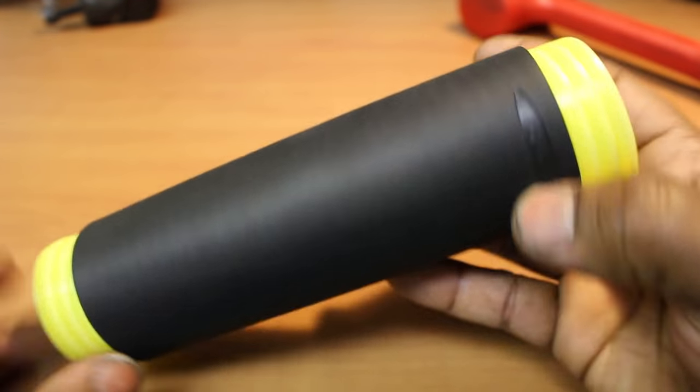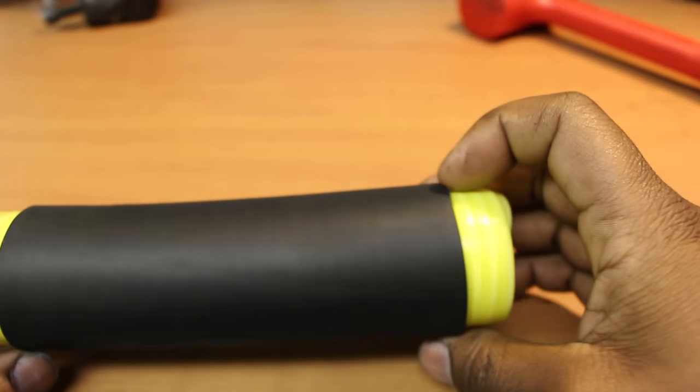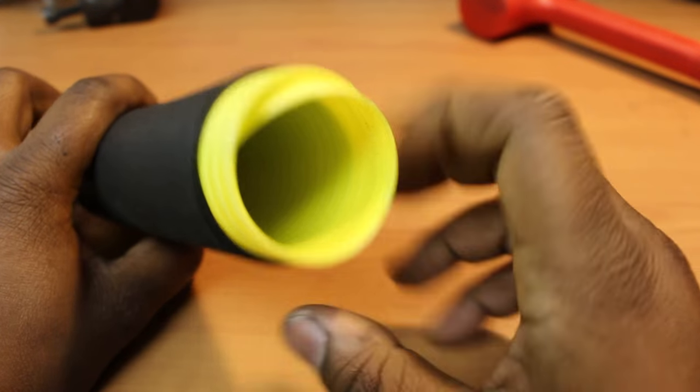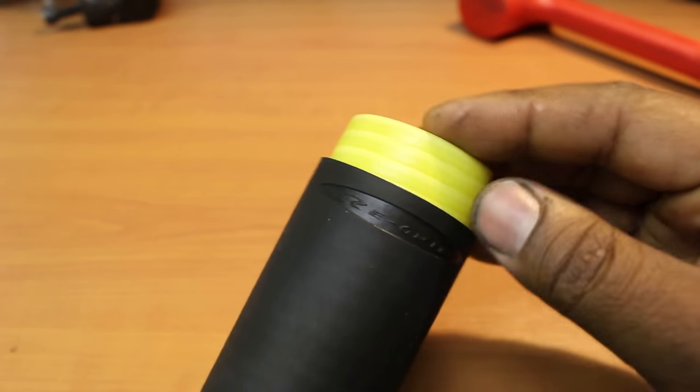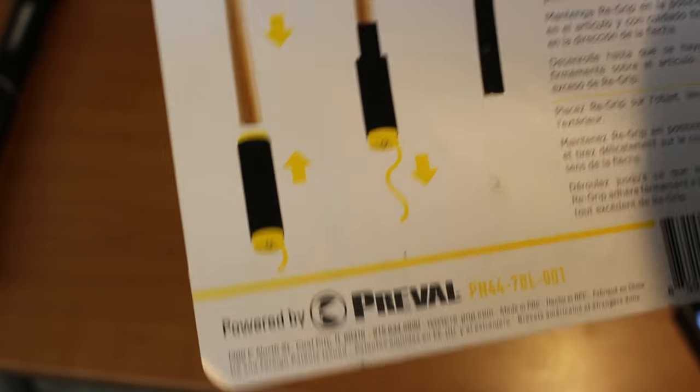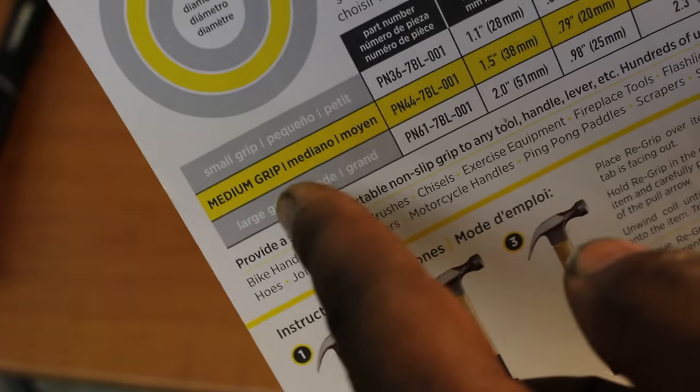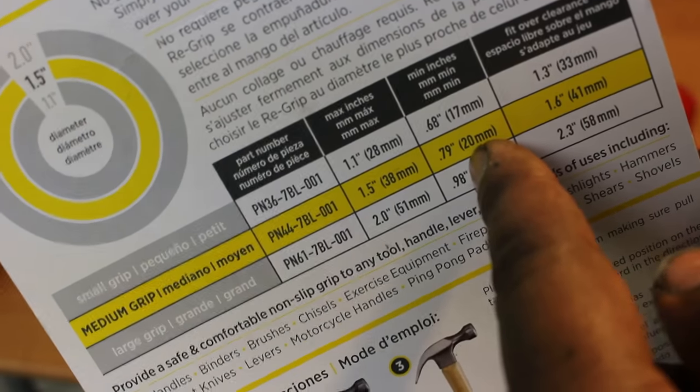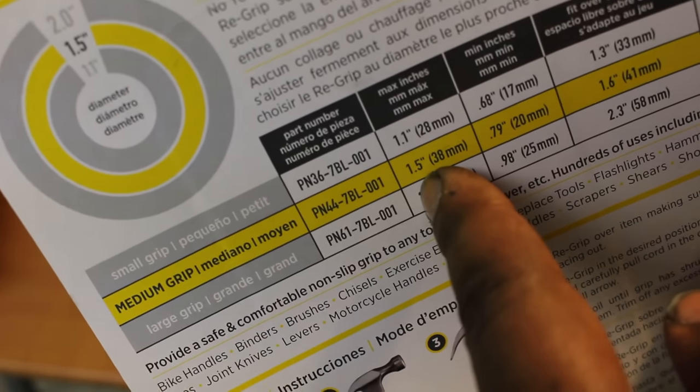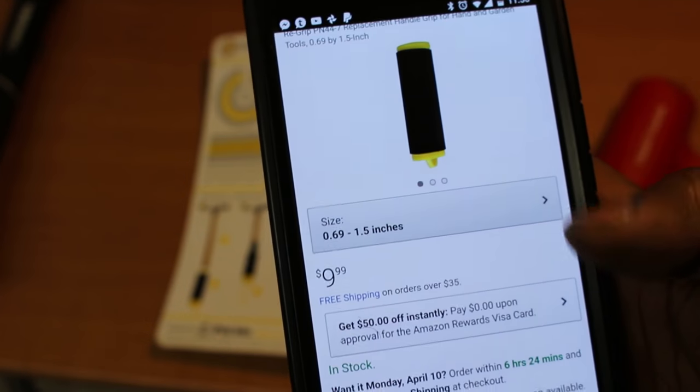So this is the Regrip. It's a product that allows you to replace the handle on any tool really that can fit down through here. And it's made by Regrip. It actually says powered by Prevail here on the packaging, but who knows what that actually means. There you can also see the part number, which would be PN44 for this one. It's the medium grip. Its minimum is 0.79 inches up to 1.5 inches. So they make three different versions and this is the medium one. Also it's only about 10 bucks on Amazon. So it's pretty cheap in my eyes.